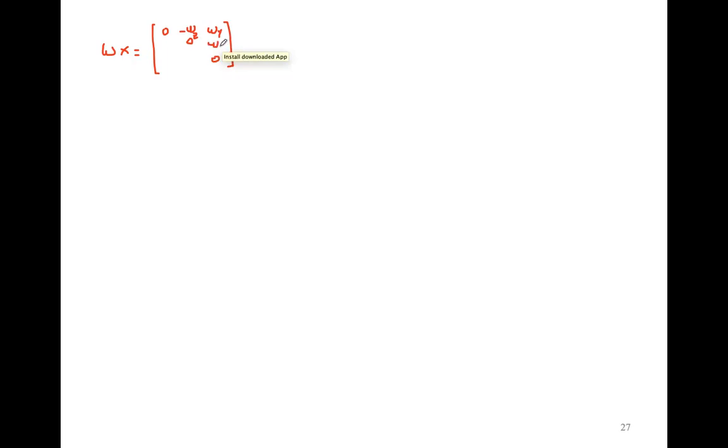First of all, I assume that you know that when you do the cross product of a vector — for example, omega — you are able to represent this product as a skew-symmetric matrix with zero diagonal elements and the off-diagonal elements given by the following expression. This is a skew-symmetric matrix, so you have omega_z, and the anti-symmetric matrix has minus omega_y and omega_x.